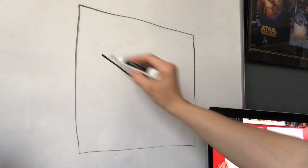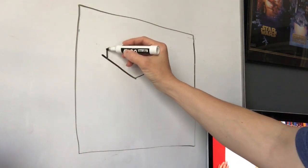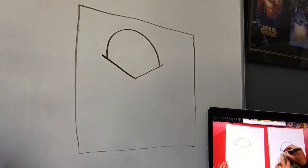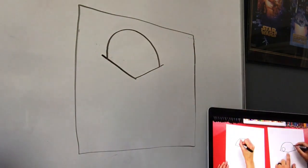Down, up, down, up. Then we're gonna make his head. We're gonna make a rainbow shape up and over. It's gonna be like an upside down U or a rainbow shape.